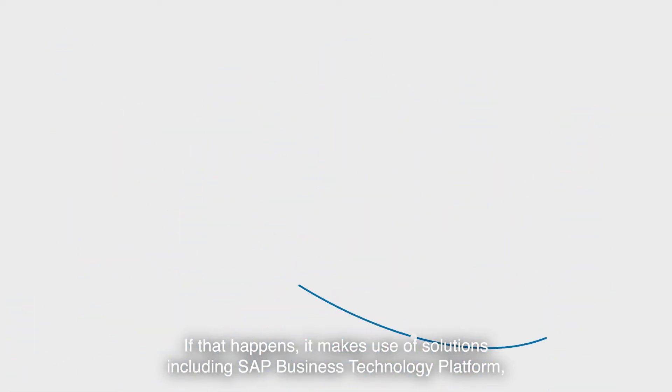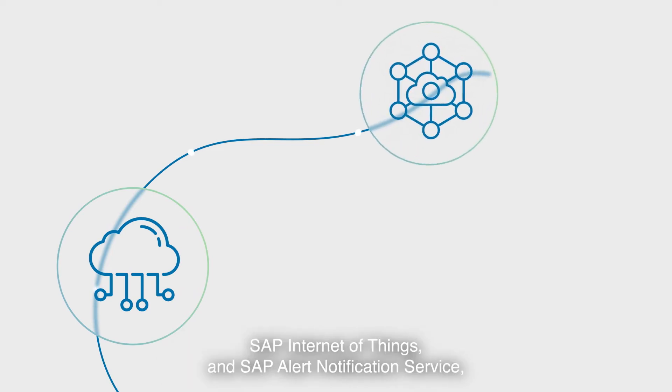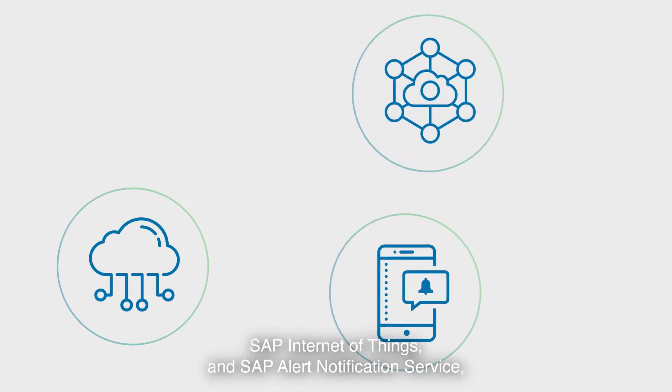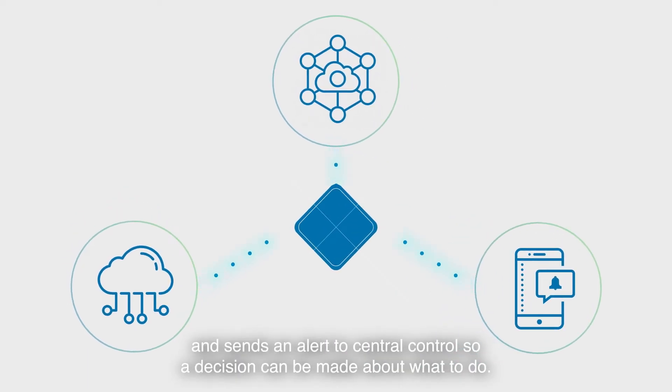If that happens, it makes use of solutions including SAP Cloud Platform, SAP Internet of Things and SAP Alert Notification Service and sends an alert to central control so a decision can be made about what to do.